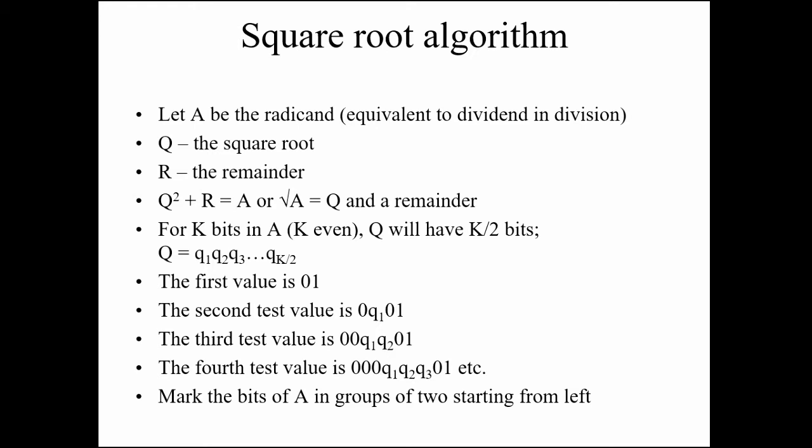The important thing to focus on is that for K bits in A, Q will have K/2 bits. If A has an odd number of bits, Q would have a fractional number of bits, which is not valid. So A must always have an even number of bits. If K is odd, we add a preceding zero to make it even.